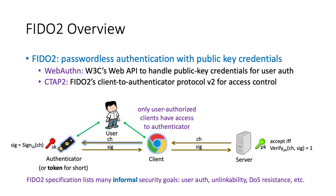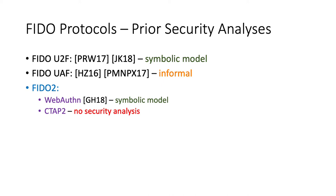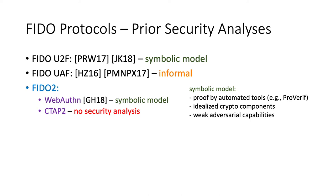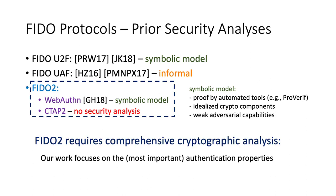In the FIDO2 specification, it lists many security goals — like user authentication, unlinkability, denial of service resistance, and so on — but they are all informal. Without formal proof or security analysis, we are not sure what security goals can be achieved. There exists some prior work on FIDO protocol analysis, but it is either informal or only conducted in the symbolic model, which is much weaker than the cryptographic security model we consider. The CTAP2 component of FIDO2 has no security analysis at all, so a comprehensive cryptographic analysis of FIDO2 is highly necessary. Our work focuses on the authentication properties, which we think are the most important.